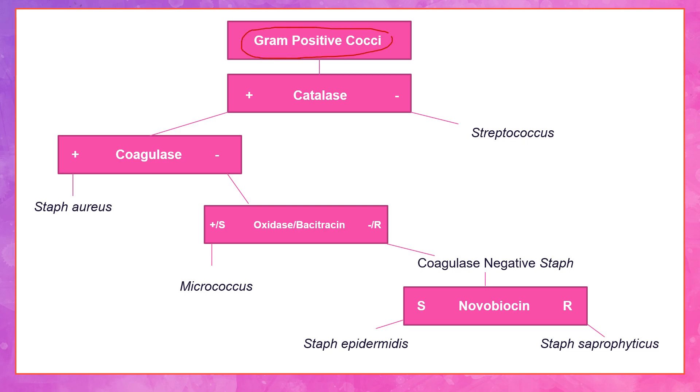For this particular example, we have an unknown gram-positive cocci. This would be seen under the microscope in a gram stain. Gram-positive means it is purple, and cocci means it is spherical in shape. Gram-positive is purple, gram-negative is pink, and cocci are spherical whereas bacilli are rod-shaped. The first thing we would do is perform a catalase test, then continue down the flowchart based upon the results.